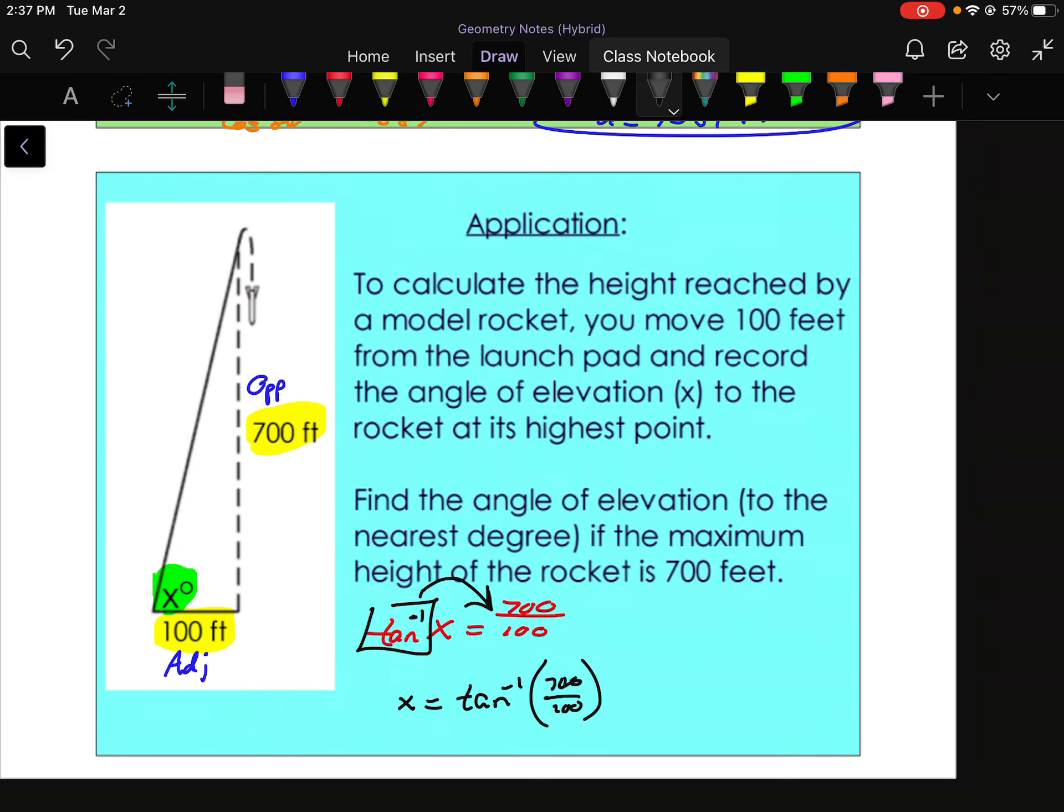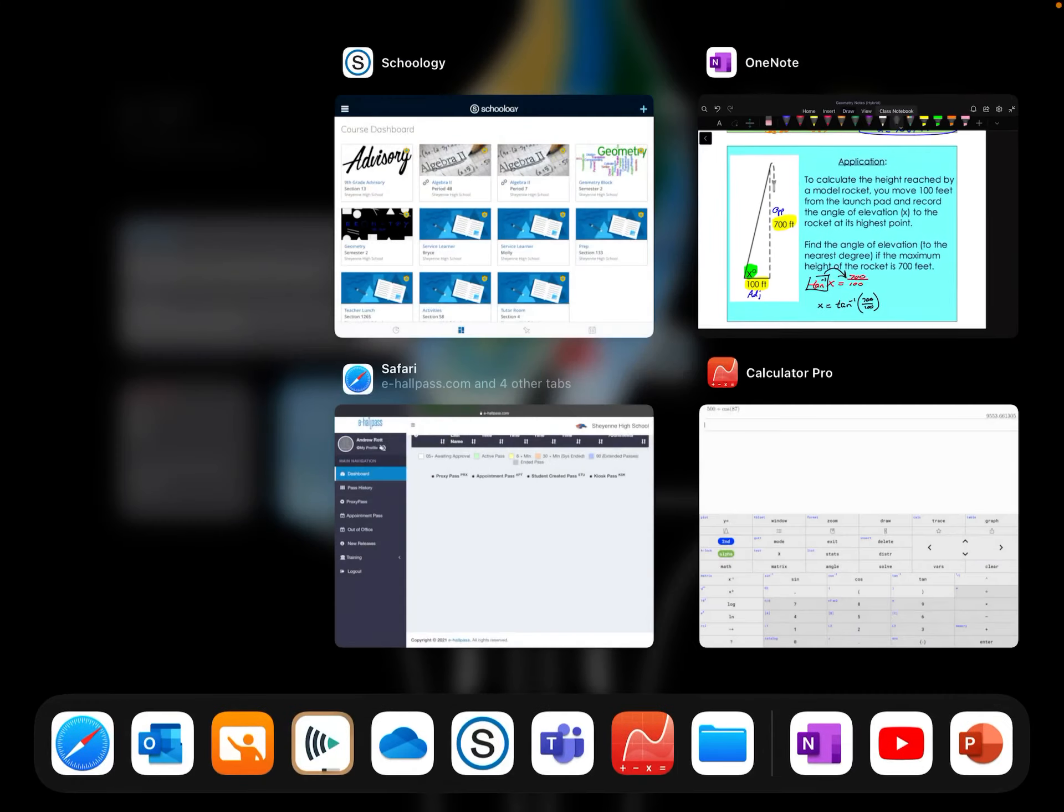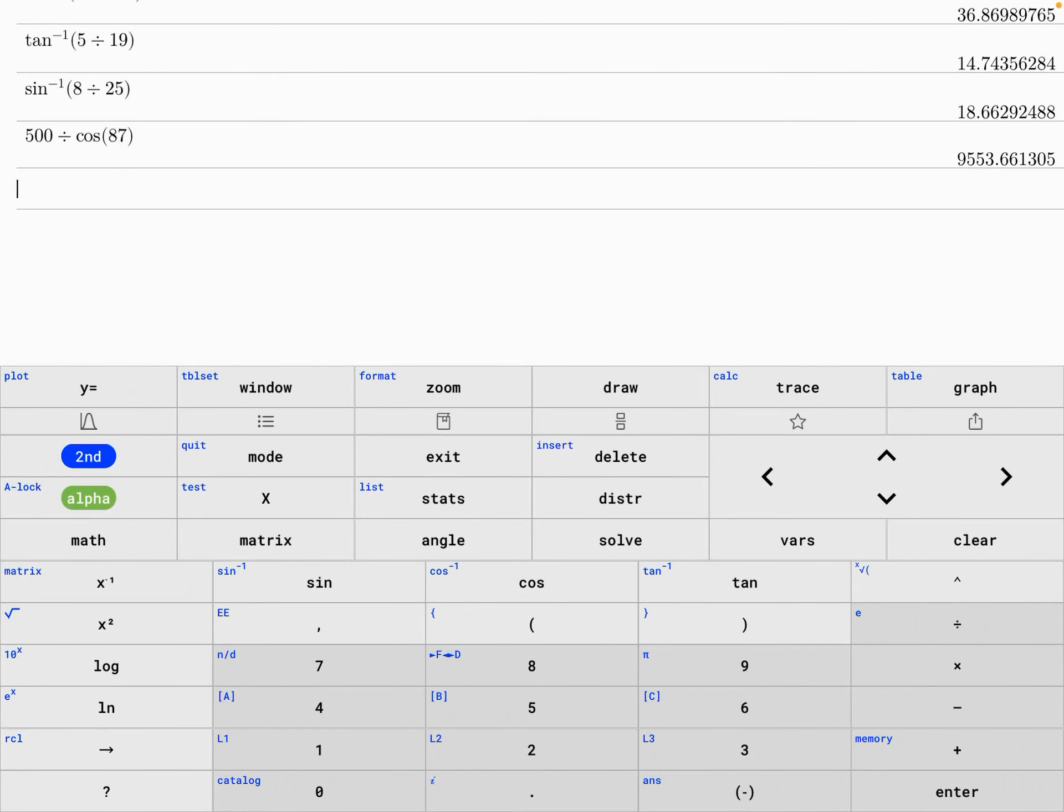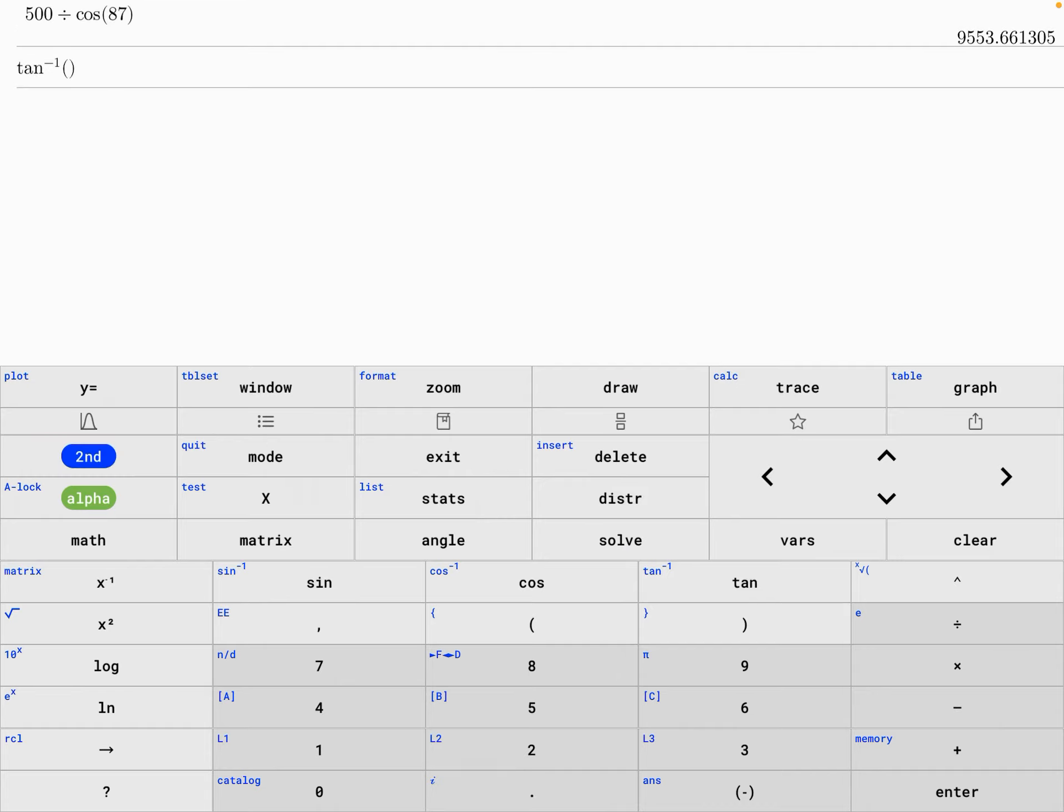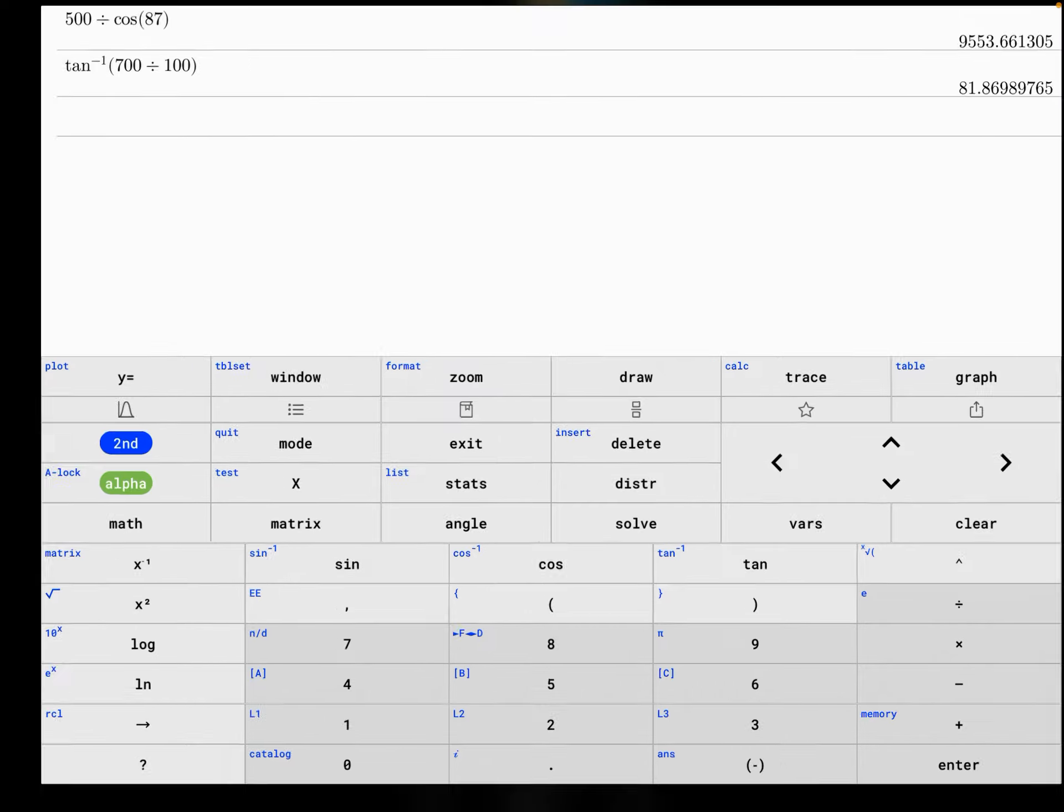You know, 700 divided by 100 is, hopefully you know that it's 7. Or you can just type it into your calculator how you see it. So remember, we need to hit the second button and then find the tan inverse there. And then you can go 700 divided by 100. Oh, missed a 0. 700 divided by 100. You get 82 degrees if you round.